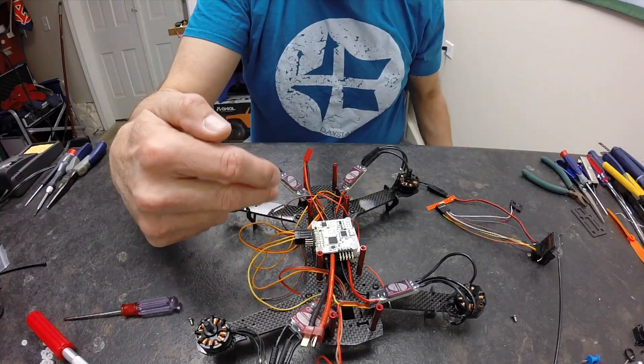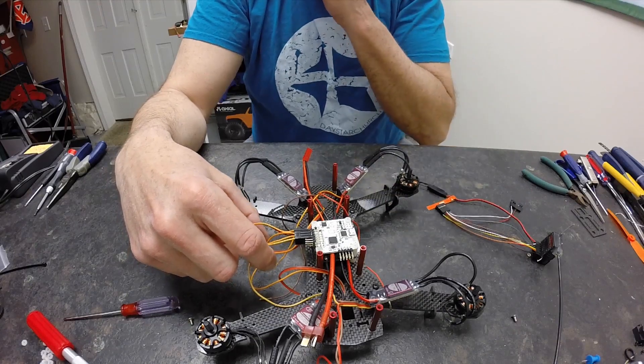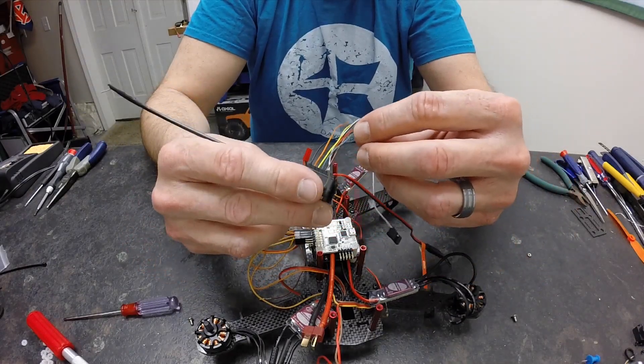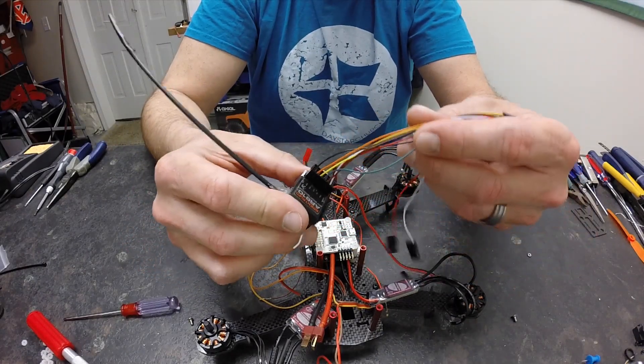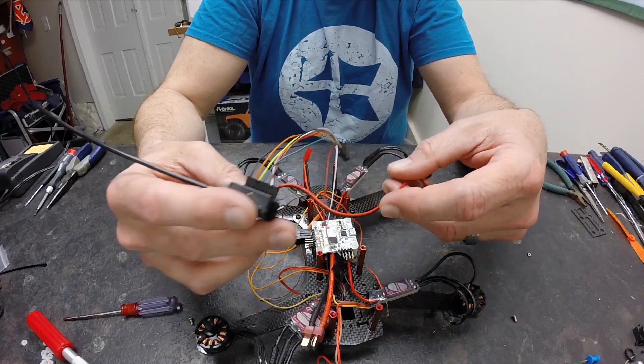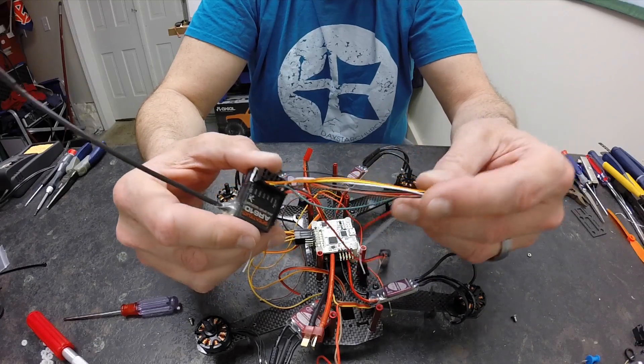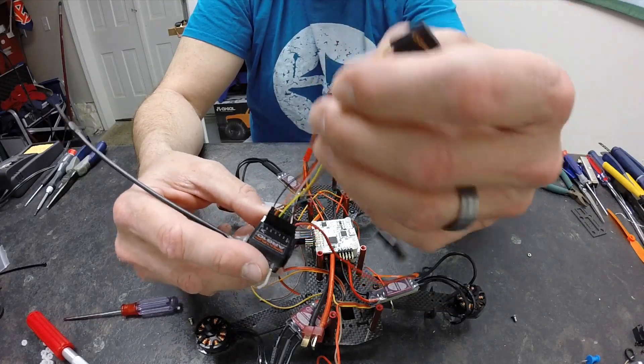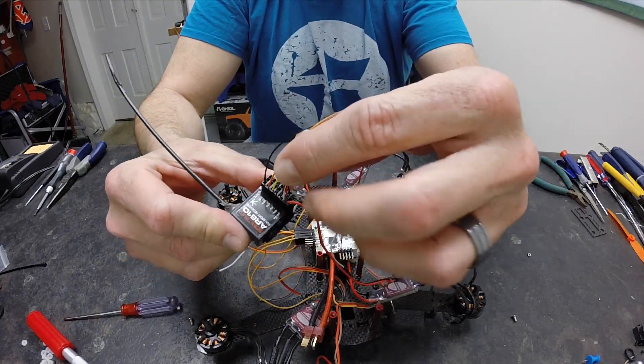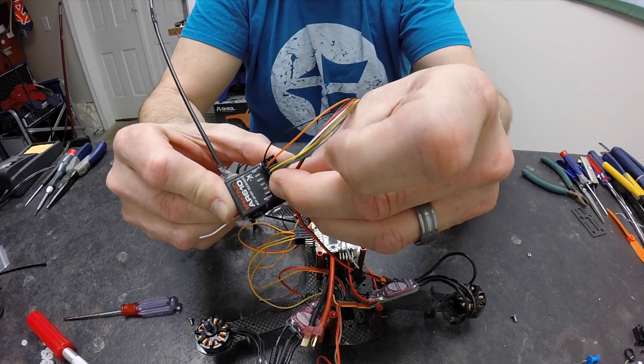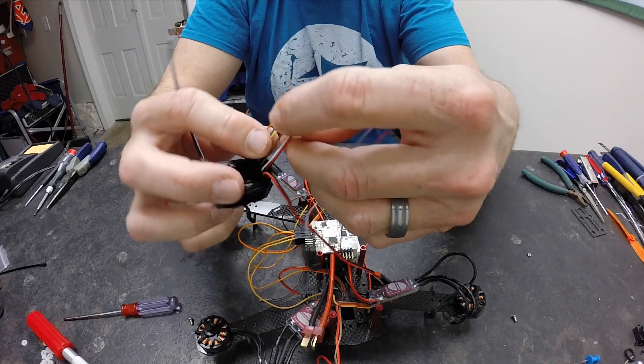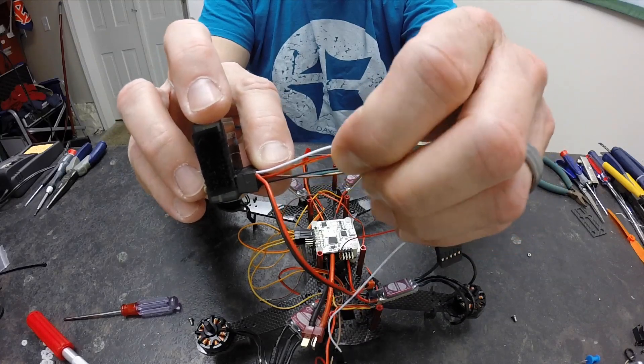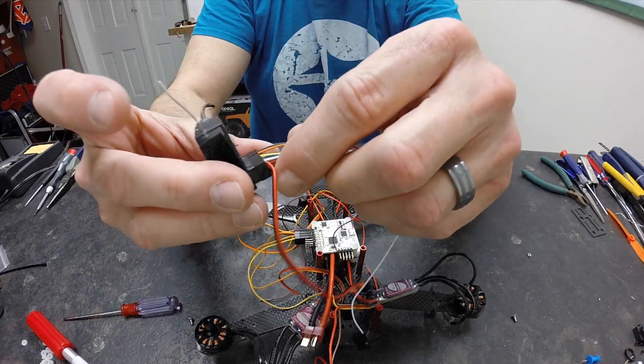So now we have all of our servo leads coming from our ESCs, and we move to the receiver. This is just a Spektrum 610 Sport receiver, nothing fancy. We're not going to have a lot of range on this mini. And if you'll notice, we have what's called a breakout cable. Some are colored, some are not. And only one wire of this breakout cable, just like our Naze that we just plugged up into our servo leads, has a signal, positive or power wire, and a negative that goes into our throttle.